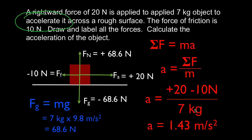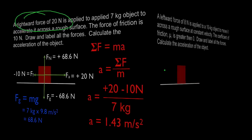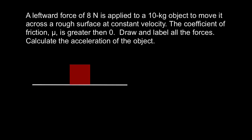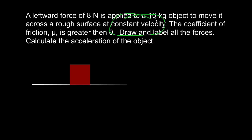We did all the labeling and calculating of the magnitudes of the forces, and then applied Newton's second law. Now let's do example two. We have a leftward force of 8 Newtons applied to a 10 kilogram object on a rough surface at constant velocity — the coefficient of friction is greater than zero. The key thing to notice is the constant velocity. If velocity is constant, it means the forces are balanced. So when we draw the free body diagram, we'll have balanced forces, and that's going to help us figure out the friction force.